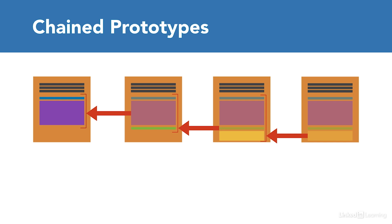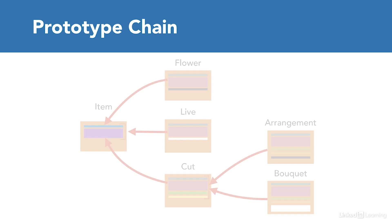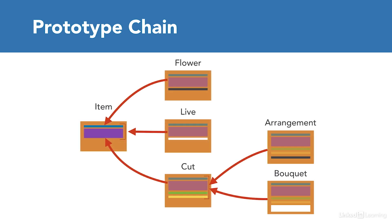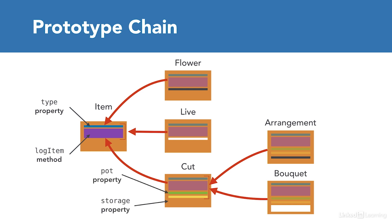But if we look closer, we also find that some of our prototypes share properties and values that are not shared with all prototypes. We can build out a set of chained prototypes in which some are based on others without all of them sharing the same properties. Before we dig in, it can be useful to sketch out the structure and relationships between our constructors. All constructors share a type property and a log item method, so we can create a generic item prototype as the origin of our chain. Flower and live are unique, but arrangement and bouquet both share pot and storage properties, so we can create a parent constructor for cut items and chain arrangement and bouquet to that.